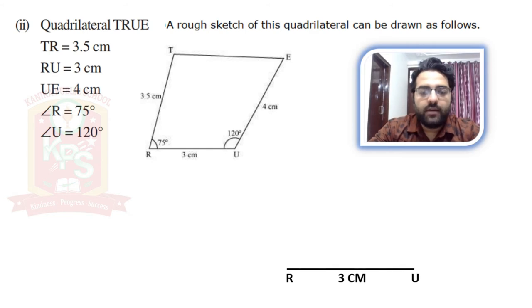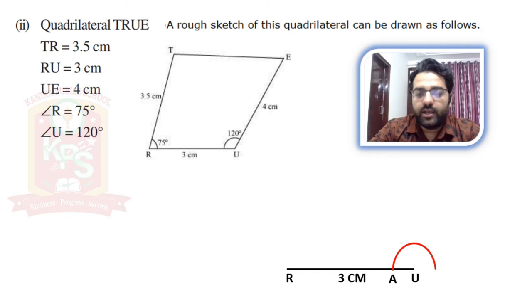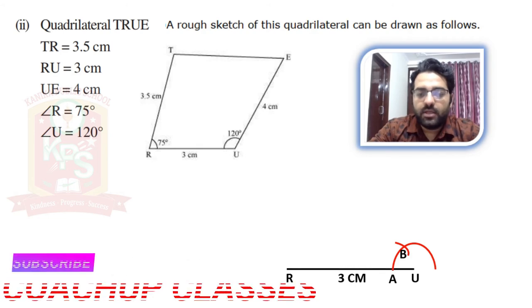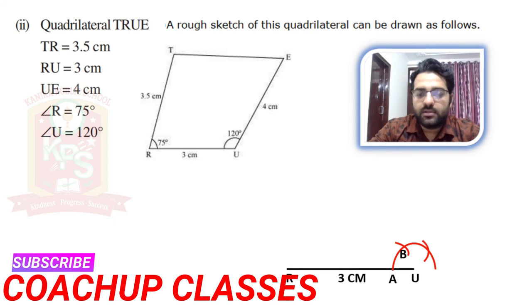At U, our angle is 120 degrees. So first of all, we will draw a 60-degree angle, and then 120 degrees. For 60 degrees, place the compass at U and draw an arc. Let's say this meets at point A; keeping the same radius, place the compass at A and cut another arc. So this gives angle 60 degrees. Next, from point B, with the same radius, cut the main arc at another point. This will give us angle 120 degrees.